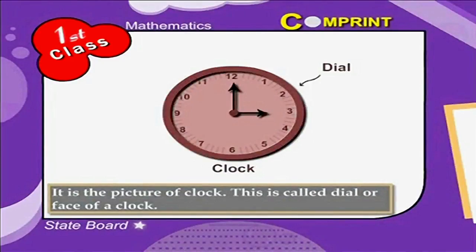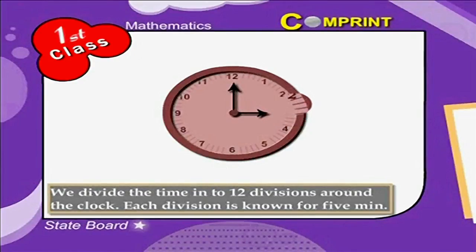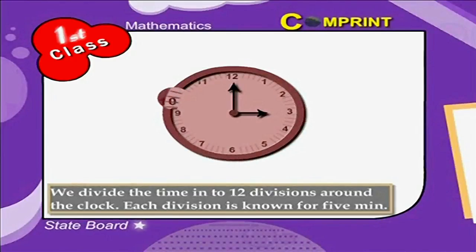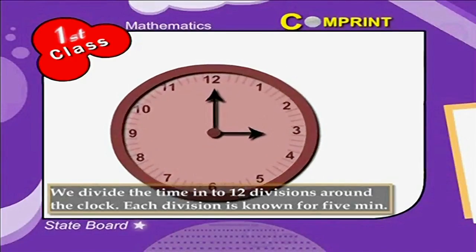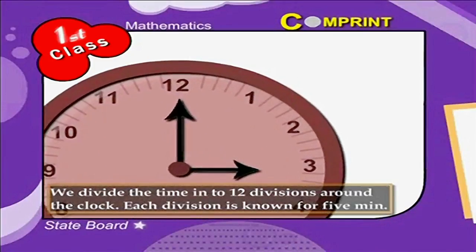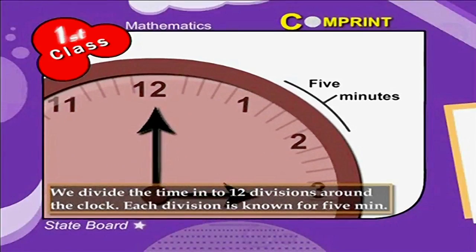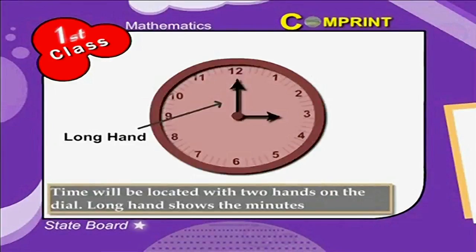Look at the picture. It is the picture of a clock. This is called the dial or face of a clock. We divide the time into 12 divisions around the clock. Each division is known for 5 minutes. Time will be located with two hands on the dial.